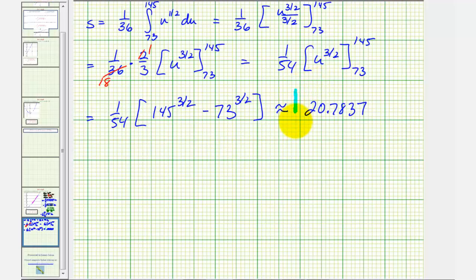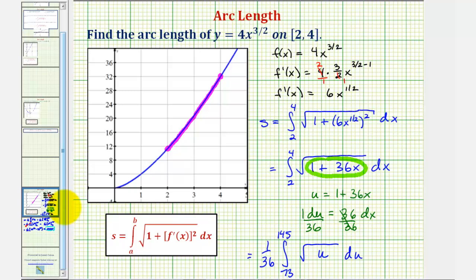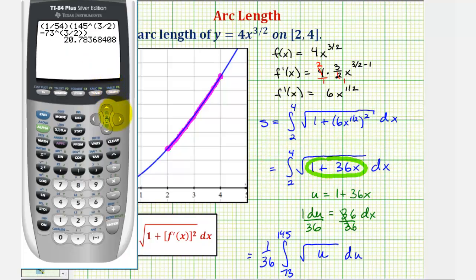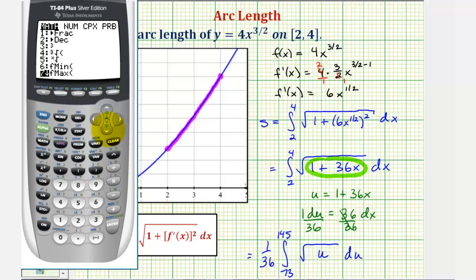Now just to make sure we did this correctly, let's go back to the first slide and evaluate this integral on the graphing calculator. We want to use the function integration tool. So I'll press math, arrow down to function integration, which is option 9. Press enter. Enter the integrand, which is the square root of 1 plus 36x. Close parenthesis, comma, the variable of integration which is x, comma, lower limit of integration is 2, comma, upper limit of integration is 4, and close parenthesis, and enter. And notice how we get the same result, which means our work is correct. The arc length is approximately 20.7837.